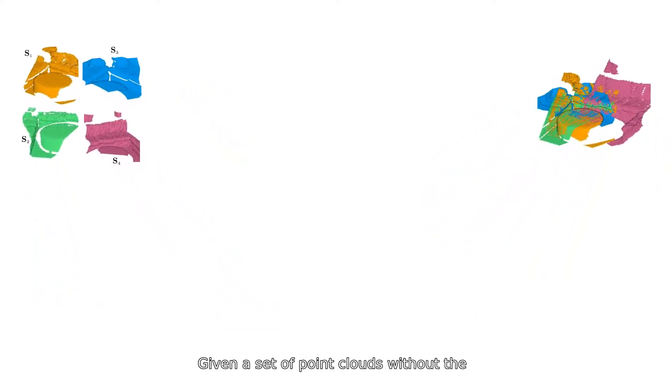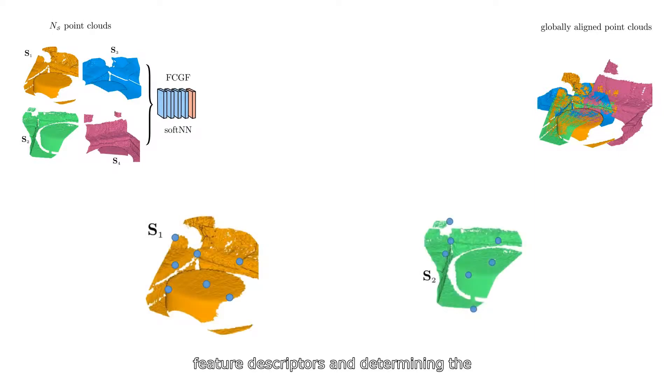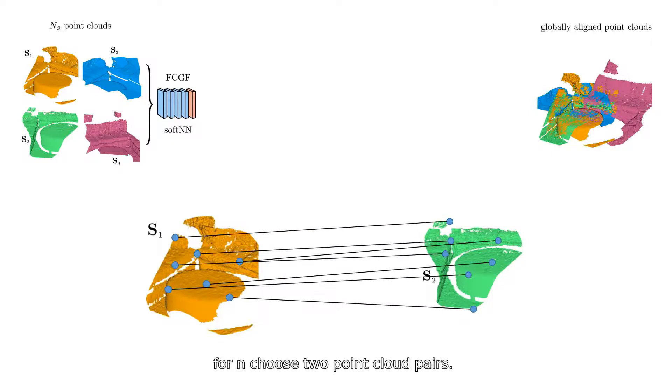Given a set of point clouds without the connectivity information, we start by extracting the local feature descriptors and determining the stochastic correspondences for N choose 2 point cloud pairs.